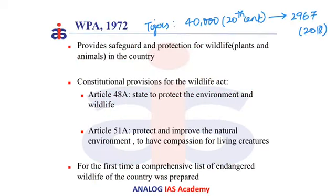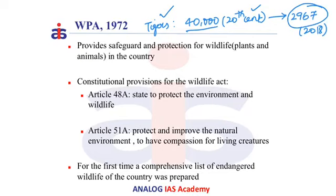During the time of British India, forests were seen as areas of resources having material benefits rather than areas for conservation. This led to deterioration in wildlife, and forests were given less importance. As a result, the tiger population was drastically reduced from 40,000 at the start of the 20th century to 2,967 as per the 2018 tiger census report.